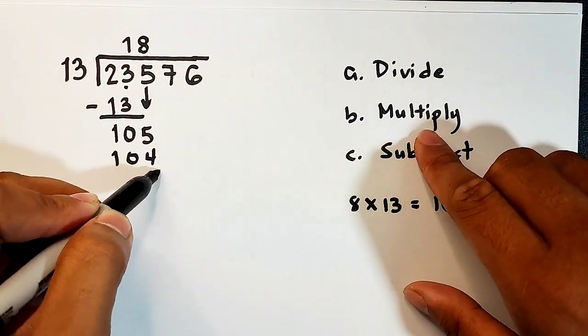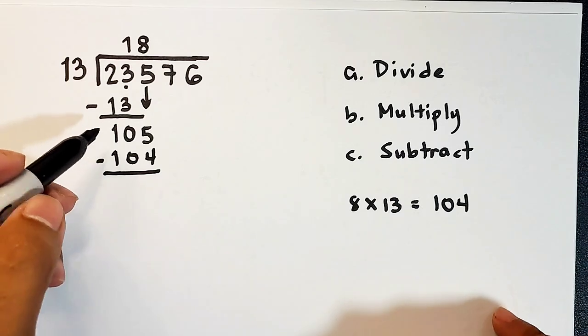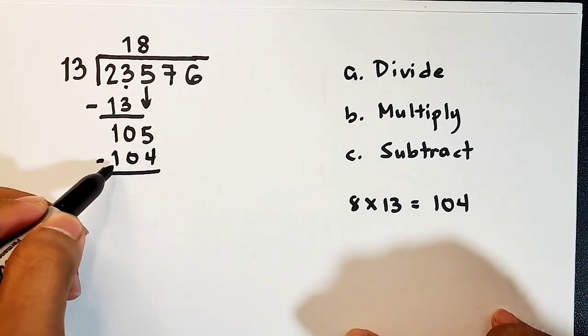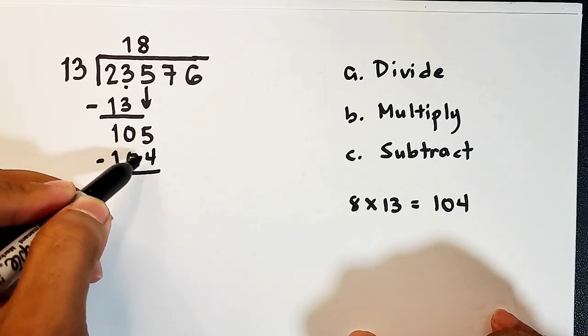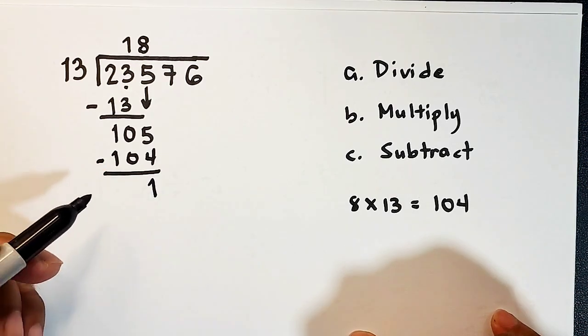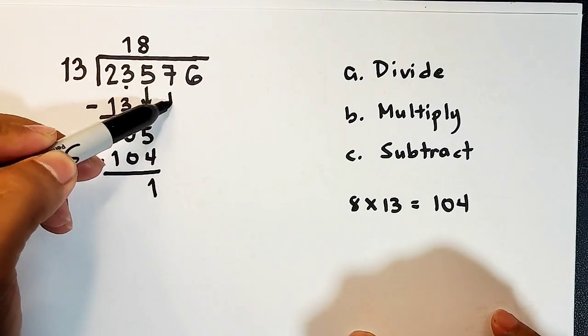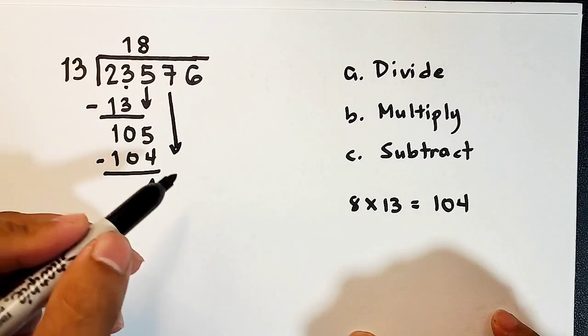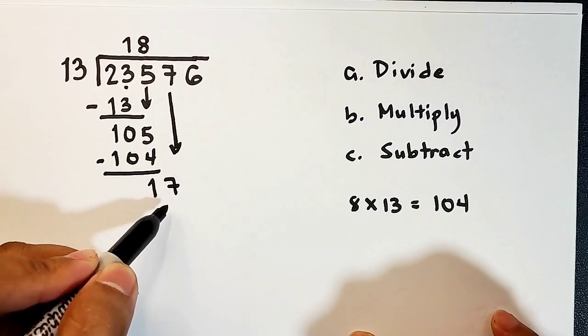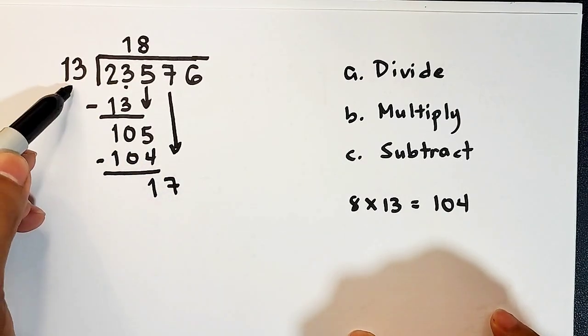So after multiplying, we will subtract. So 105 minus 104 is equal to 1. So after this, we will bring down 7. So what we have now is 17 divided by 13.